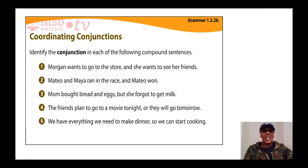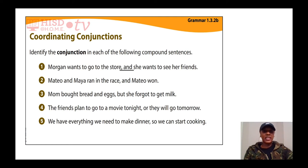Let's identify the conjunctions in each of the following compound sentences. Number one: 'Morgan wants to go to the store, and she wants to see her friends.' Our conjunction is comma and — it conjoins 'Morgan wants to go to the store' with 'she wants to see her friends,' putting together two simple sentences with the conjunction comma and to make a compound sentence.